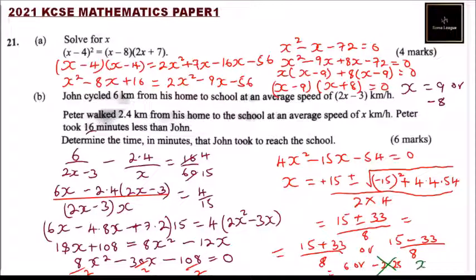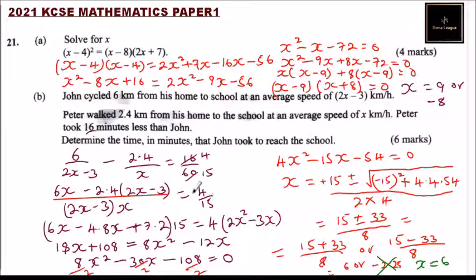With x equals 6, John's speed is 2x minus 3 equals 9 kilometers per hour. John's time is 6 divided by 9 hours. We multiply by 60 to convert to minutes.